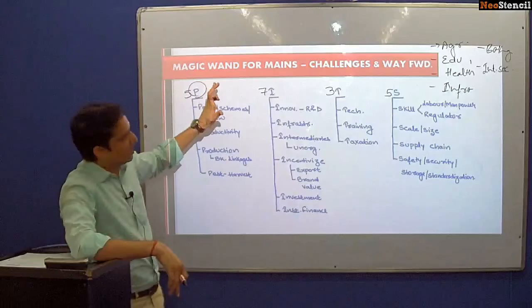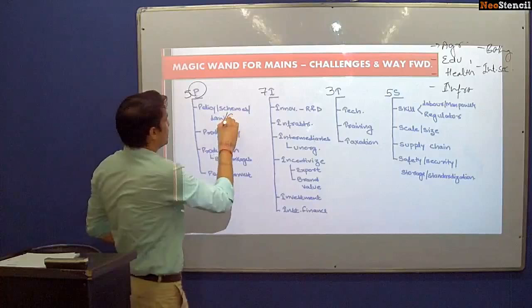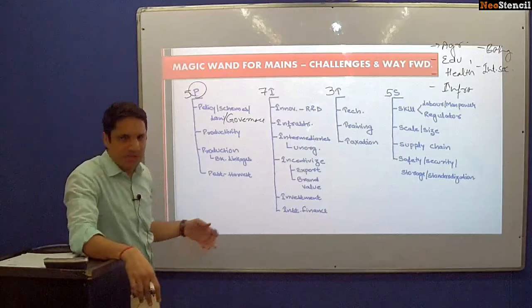Whatever the question is related to, we can use the same diagram or the same dimensions. The first dimension — in the case of agriculture — is policy, schemes, law, and governance. As we discussed, government policies are restrictive in nature: we have APMC, the Essential Commodities Act, and the MSP-driven model. All these are policies which are challenges to the agriculture sector.